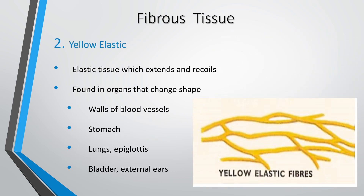Yellow elastic fibrous tissue is an elastic tissue which extends and recoils, found in shape-changing organs — the walls of the blood vessels, the stomach, the lungs, the epiglottis, the bladder, and the external ears. Fibrocartilage can also be found in some of these places alongside yellow elastic fibrous tissue.